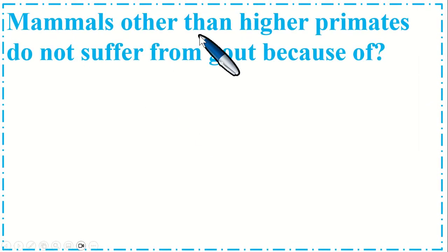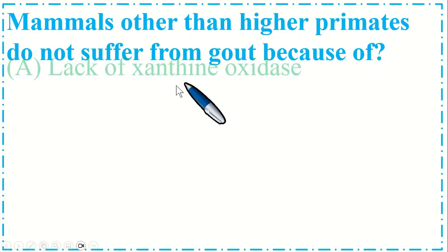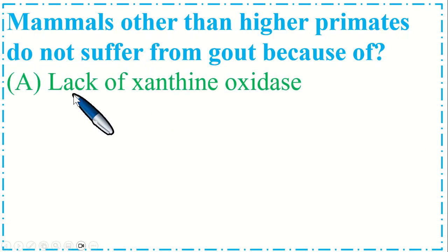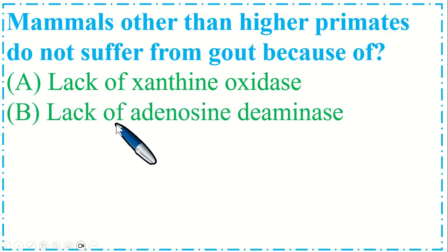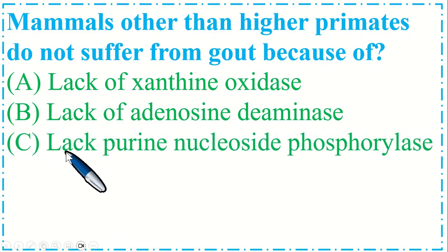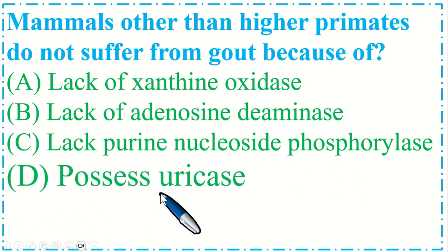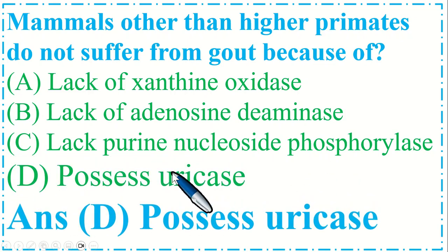Mammals other than higher primates do not suffer from gout because of: Option A. Lack of xanthine oxidase, B. Lack of adenosine deaminase, C. Lack of purine nucleoside phosphorylase, and D. Possess uricase. The correct option is D, possess uricase.